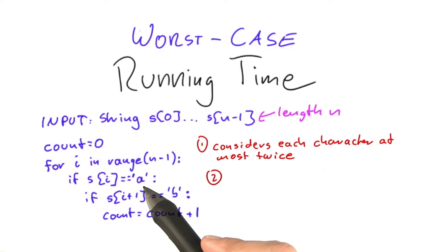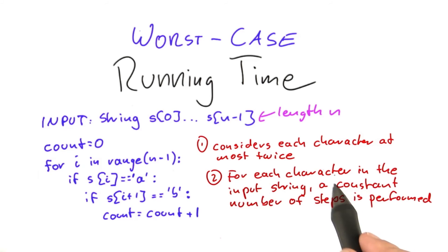And if it does not find an A, it will do 0 additional operations. So for each character in the input string, a constant number of steps is performed. And this is exactly the advantage here because with big O notation we can ignore constants.